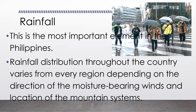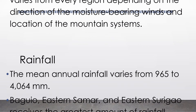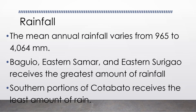Rainfall is the most important element that can affect the climate of the Philippines. Rainfall distribution throughout the country varies from every region depending on the direction of the moisture-bearing winds and location of the mountain systems. The mean annual rainfall varies from 965 to 4,064 millimeters of water. Baguio, Eastern Samar, and Eastern Surigao receive the greatest amount of rainfall, while southern portions of Cotabato receive the least amount of rain.